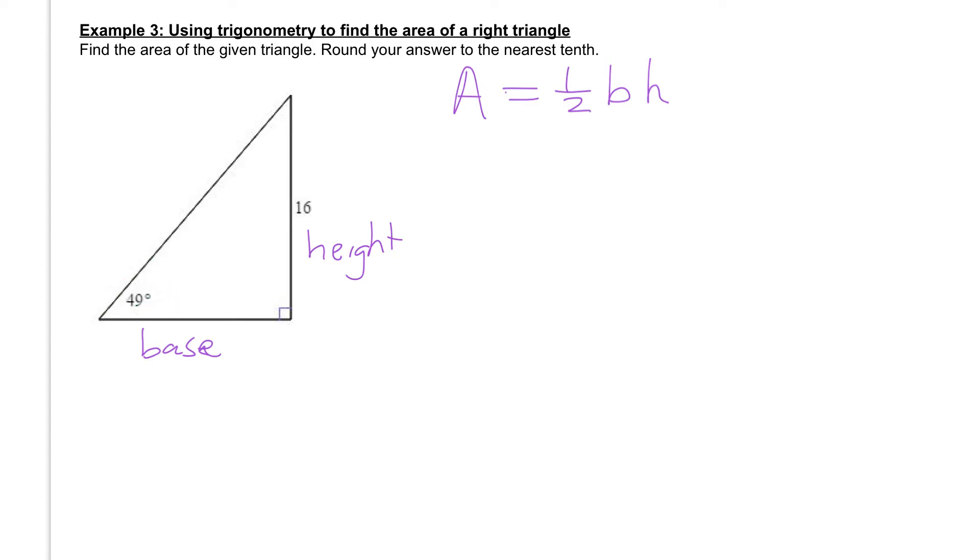So if we have an angle, we have the opposite, and we're looking for the adjacent. Opposite and adjacent tells us that we can use the tangent function. So we can take the tangent of 49 degrees, set that equal to 16 over our base.